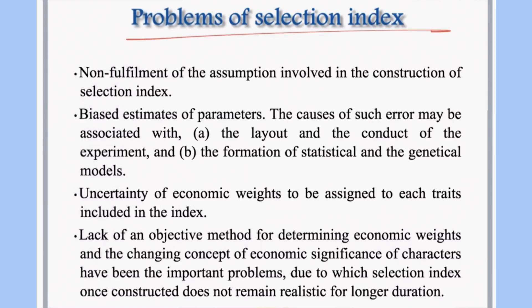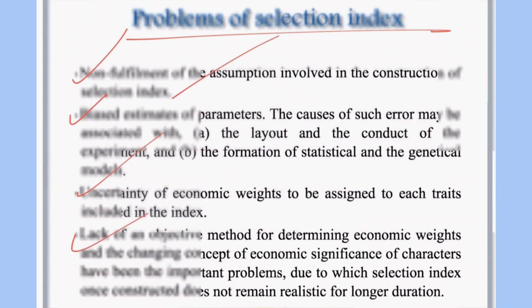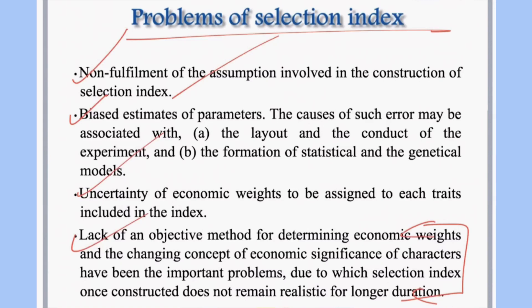Problems of selection indices include: non-fulfillment of statistical and genetical assumptions; biased estimates of parameters due to errors in experimental layout or conduction of trials; uncertainty of economic weights due to different characters included in the index; and the problem of reliability — once a selection index is constructed it does not remain realistic for longer duration and keeps changing.